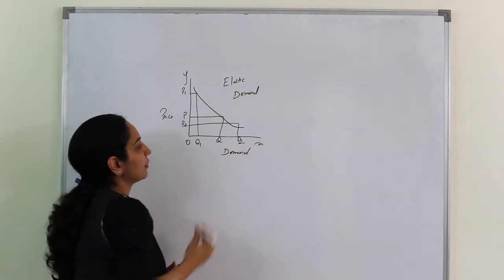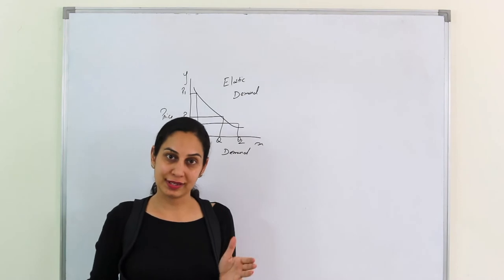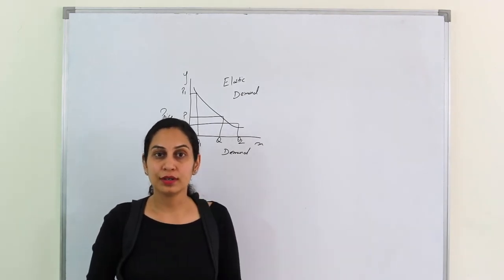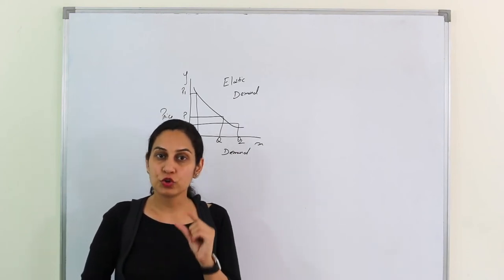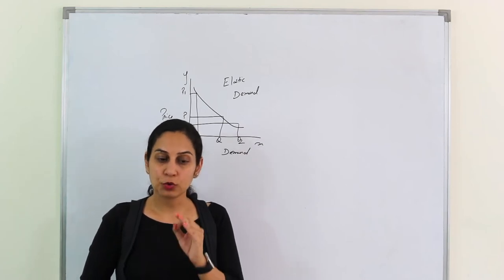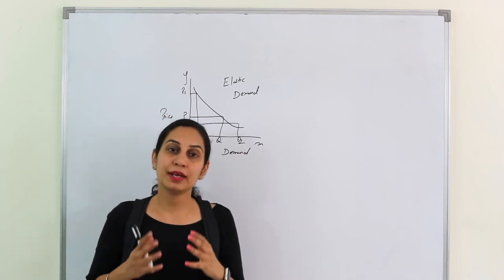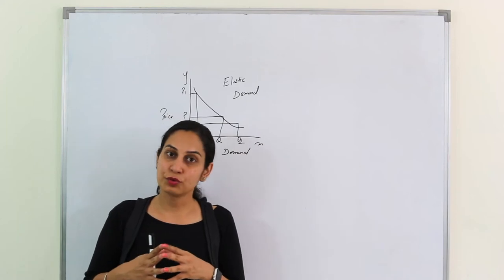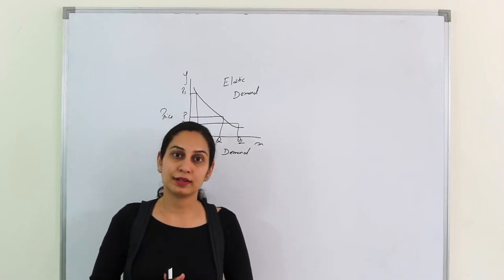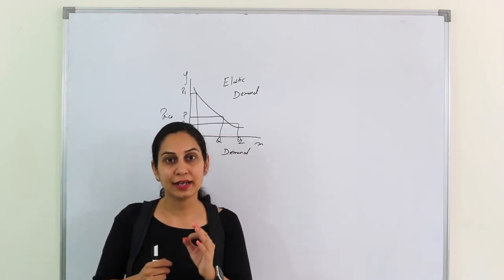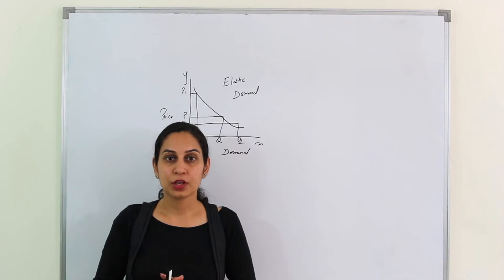Elastic Demand says that as soon as the prices go up, the demand falls. The prices go down, the quantity increases, the demand increases. But proportionate change matters. The proportionate change in price is lesser than proportionate change in demand. This is the difference.